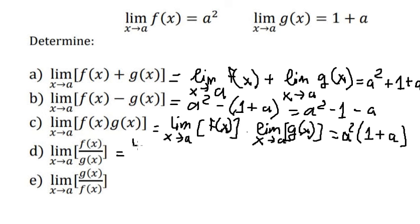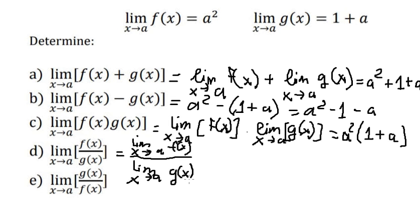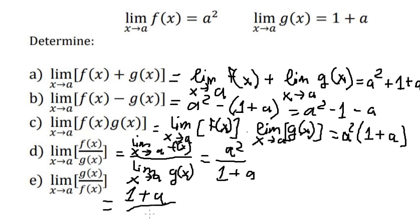In this situation I will write the limit s approach to a of f of s, over the limit s approach to a of g of s. So f of s we have a square, g of s we have one plus a. And the last one is one plus a over a square. And this is the final answer.